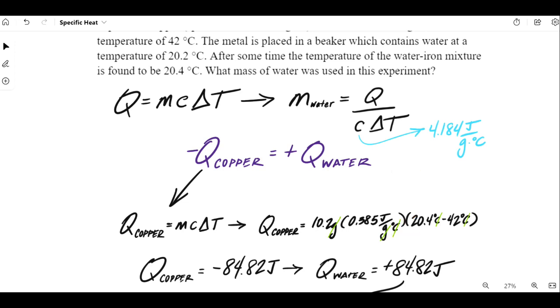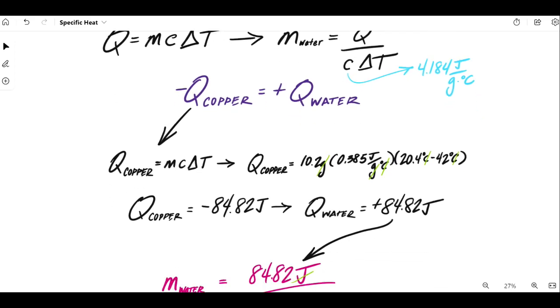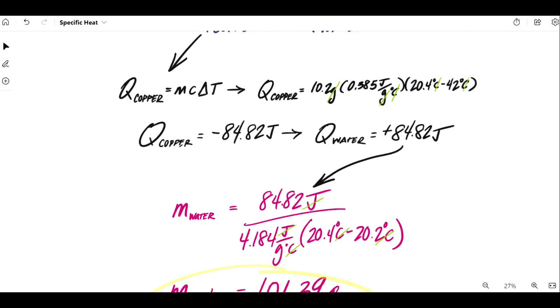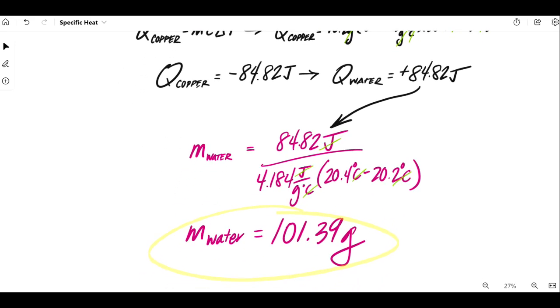So, now I'm able to use my equation rearranged to solve for mass because I do have a Q value. So, now we're going back to the water and we are going to plug in that 84.82 joules. We know the specific heat of water and I'm using the final and initial temperatures given in the problem, making sure that I'm doing T final minus T initial. And when we do that, we find that the mass of this water in the beaker was 101.39 grams.